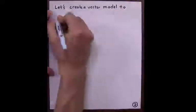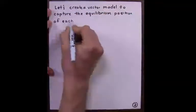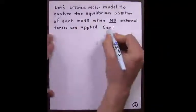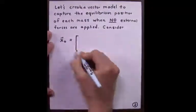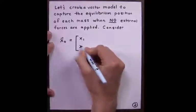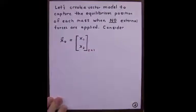Let's create a vector model to capture the equilibrium position of each mass when no external forces are applied. Consider x naught, storing x1 in the first row, x2 in the second row, which is a two-by-one vector.